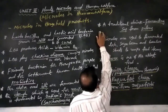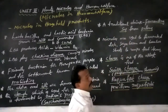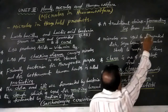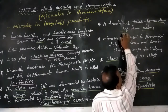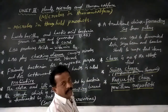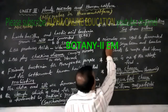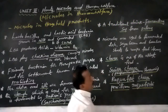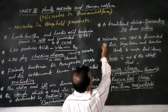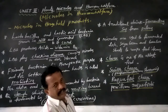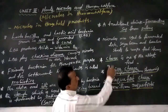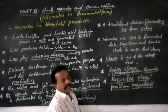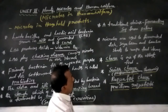Toddy is used as a traditional drink in some parts of southern India. Microbes are also used to ferment soya bean and bamboo shoots to make tasty and colorful food items.